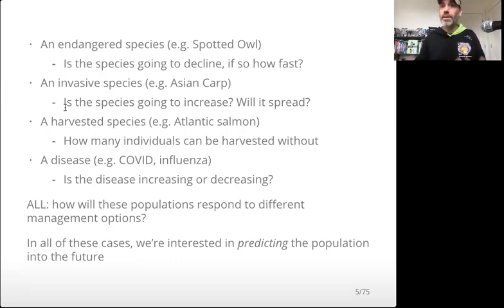For harvested species, how many individuals can be harvested without endangering the population? For diseases such as COVID and influenza, is the disease increasing or decreasing? Similarly to invasive species, is it spreading spatially? And for pretty much all of these questions, we also have the question of how will these populations respond to different management options? The unifying thing about these questions is in all cases, they're questions about predictions, questions about what the population is going to be doing in the future. This ties to this idea of dynamic models. A lot of the questions we have about biological populations that we're trying to manage, monitor, or understand are often questions about what they're going to do in the future.